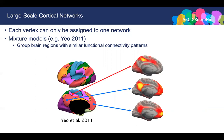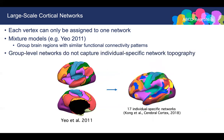On the other hand, even though a region is close to the posterior cingulate cortex, if its connectivity patterns are very different, it is assigned to a different network. These parcellations are estimated based on data averaged across many individuals, referred to as group-level parcellations. However, the group-level parcellations do not capture individual-specific topography. In the first part of the lecture, I will introduce supervised models for estimating individual-specific parcellations.